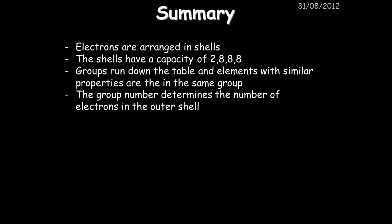So in summary, the electrons found within atoms are arranged in shells. The shells have a capacity: the first shell has a maximum of two electrons, the second shell eight, the third shell eight, and the fourth shell eight. The groups run down the periodic table, so anything within a vertical group has very similar properties to one another. So for instance, lithium and sodium are very similar in their properties. And the group number determines the number of electrons within its outer shell. So an example of this would be lithium being in group one has one in its outer shell, magnesium being in group two has two, and something like aluminum being in group three has three in its outer shell. And there are eight groups in total found on the periodic table.